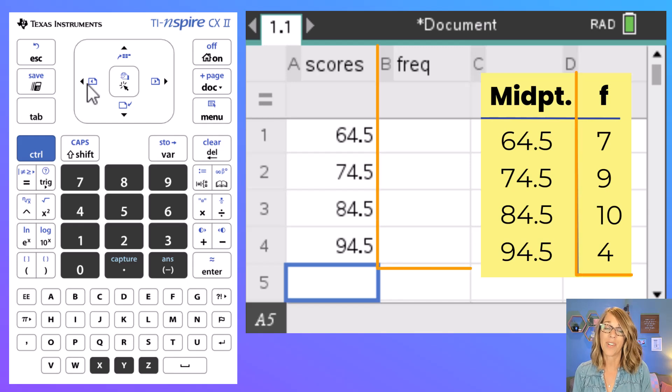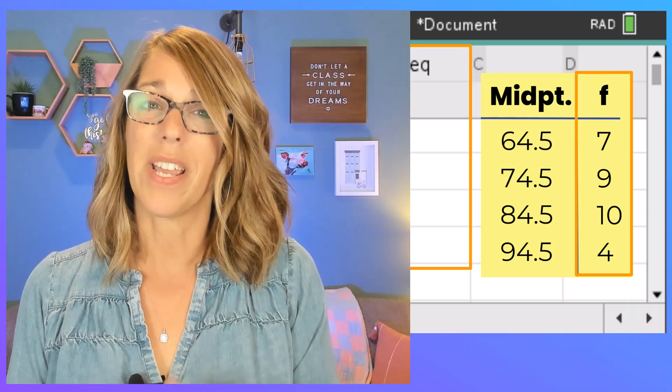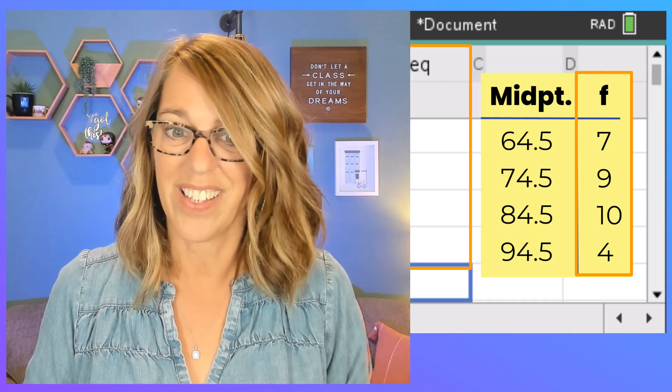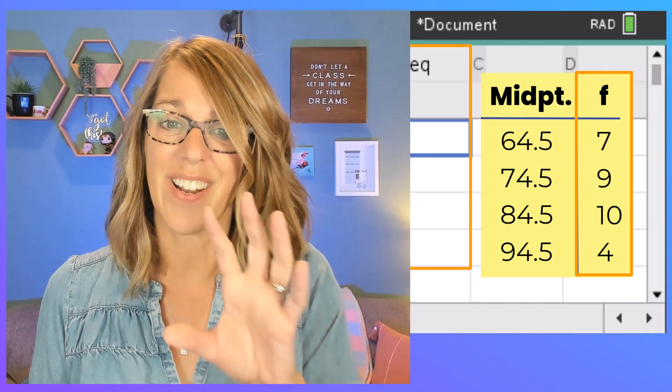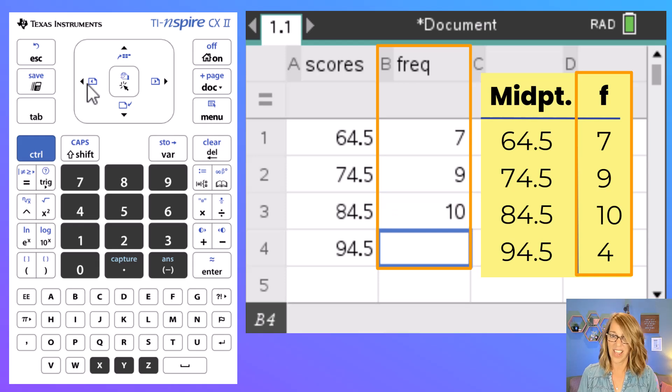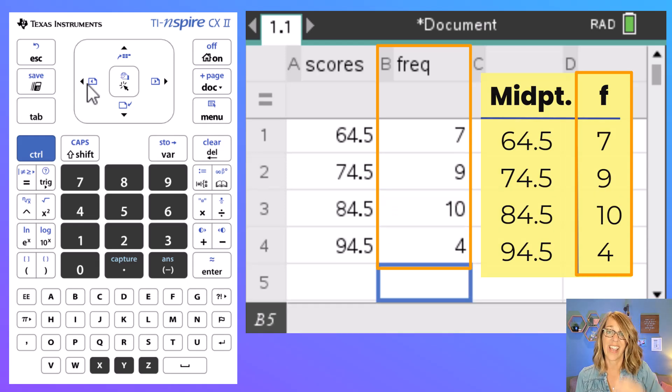Next I'm going to type in the frequencies. My midpoints are an estimate of a value in each of those groups and I know that I've got a certain number of students that are at each of those scores. So I've got seven students in the first group, nine students in the next, 10 in the next, and four in the next.